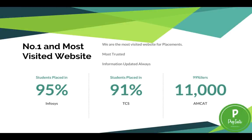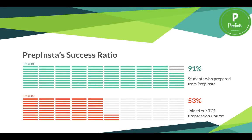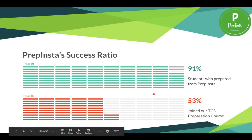PrepInsta is the number one most-visited placement preparation website in India. Our nearest competitor has less than 40 percent of our traffic. About 90 to 95 percent of students who joined PrepInsta for Infosys got placed, 91 percent got placed in TCS, and around 11,000 students who prepared from PrepInsta scored 99 percent in AMCAT. PrepInsta has a 91 percent placement success ratio.